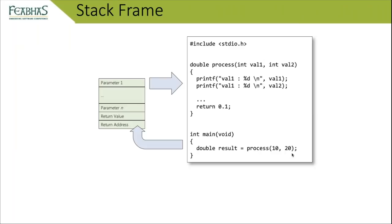For dynamic memory, we have the concept of stack frames. When one function calls another, a stack frame is created. A stack frame manages the parameter values — for example, calling process with values 10 and 20 will store those arguments. It also provides space for the return value, and contains the return address so the program can return to the call site after the function completes.